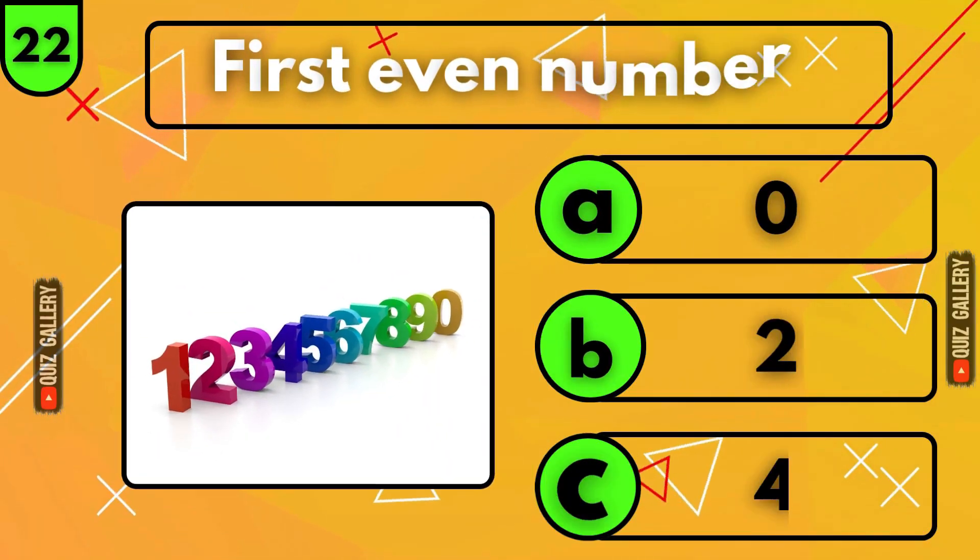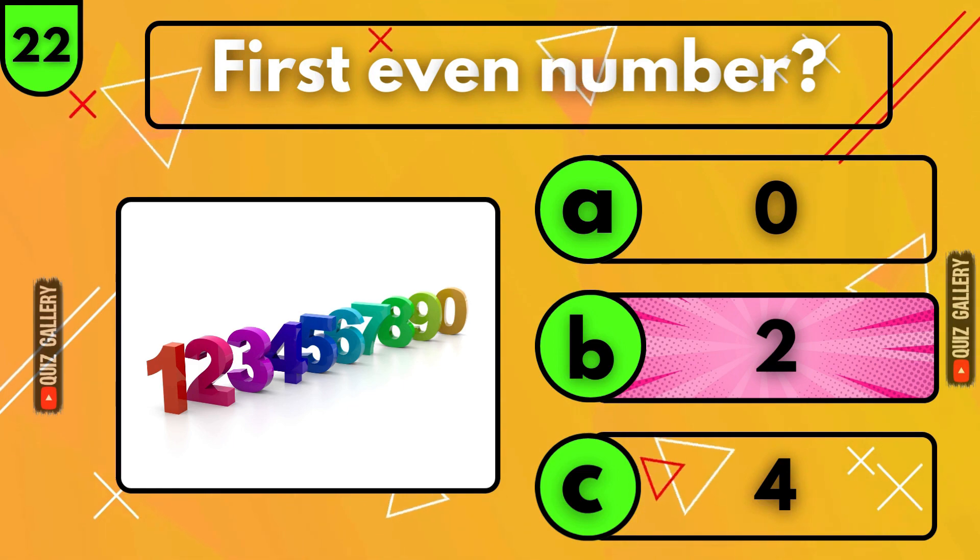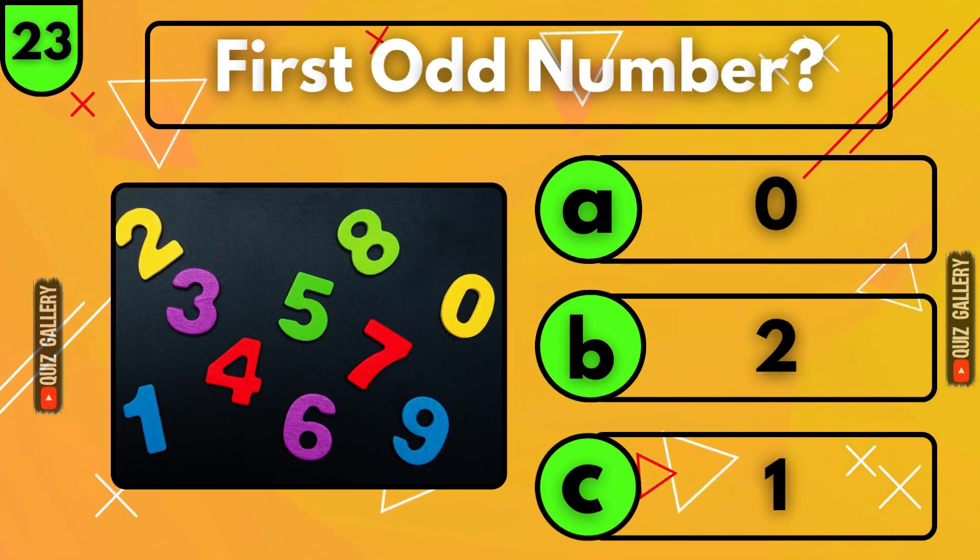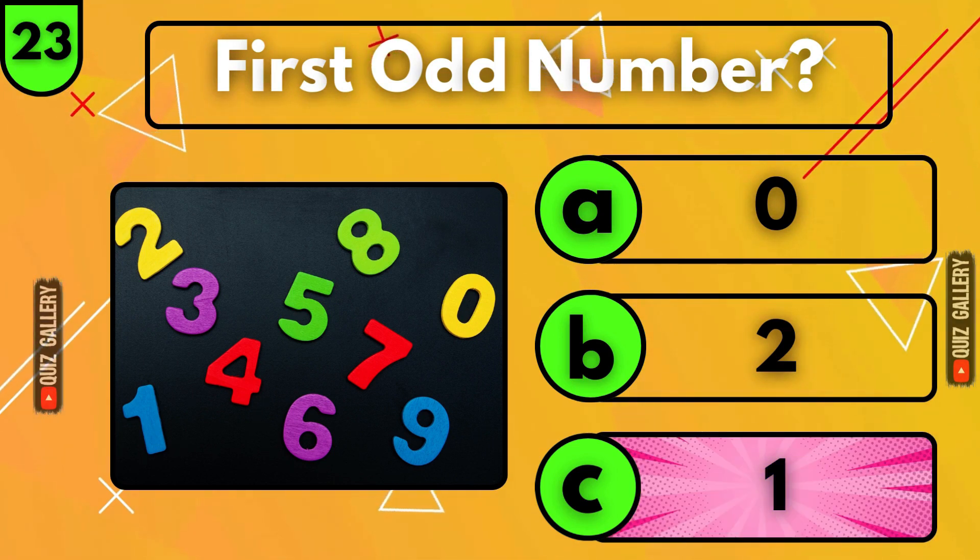What is the first even number? Yes, it is 2! What is the first odd number? 1 is first odd number!